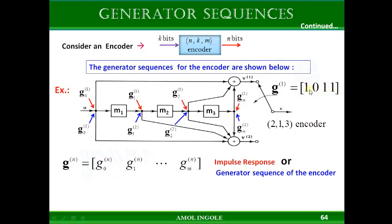The first bit of the generator sequence is for the current message bit. The second bit is written as 0 because there is no connection from M1 to the adder module. The third bit is for the bit stored in M2, and the fourth bit is for the bit stored in M3. Similarly, you can write the generator sequence for output 2, which has connections from the current message bit, M1, M2, and M3.